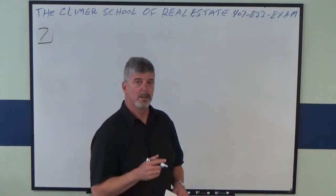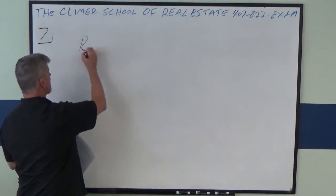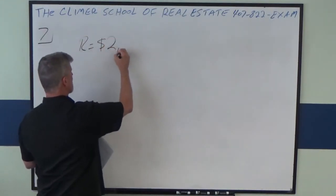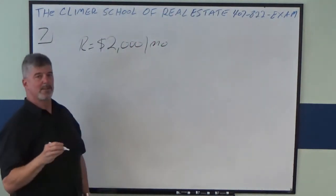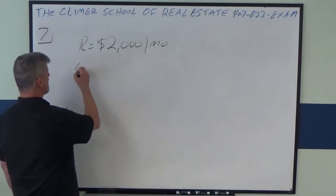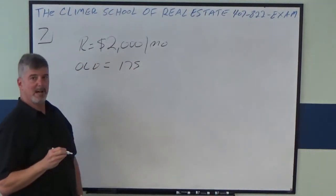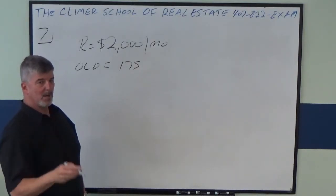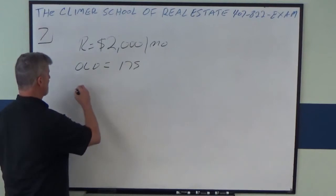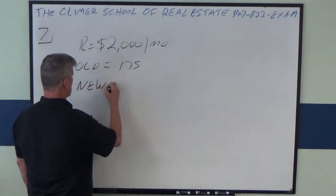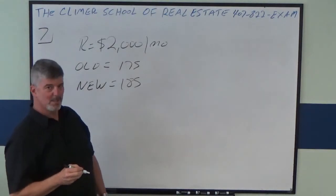So let's talk about the relevant information. The base monthly rent is $2,000 a month. At the time they signed the lease, the old index was $175. Later on — it could be a year, it doesn't matter — the new index is $185. The question is, what is the new rent?